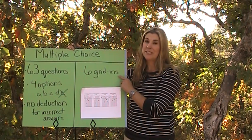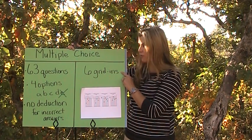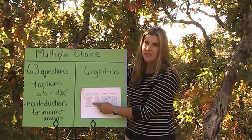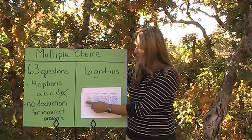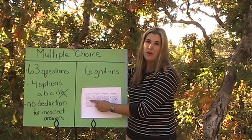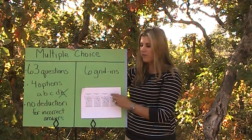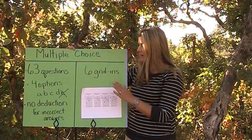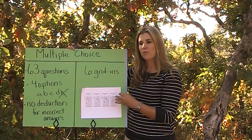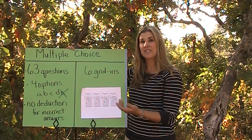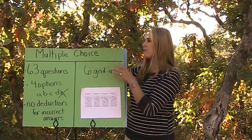We are also experiencing something new this next year — there are six gridding questions. A gridding question looks like this: you write in the answer, which is going to be a numerical value, and then you bubble in the little circles below that correspond to the number you wrote. This will likely increase the necessity to do some mathematical problems, since there will be six questions of this grid-in variety.